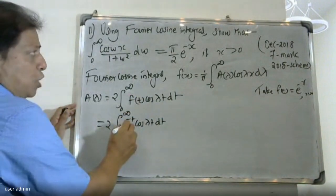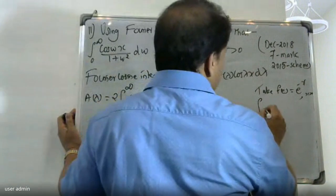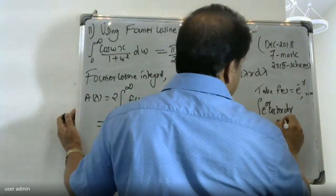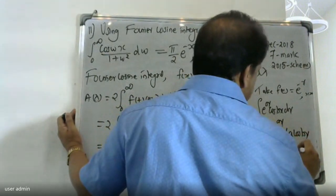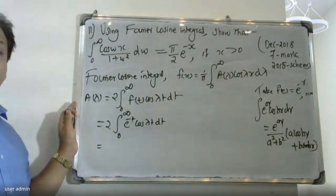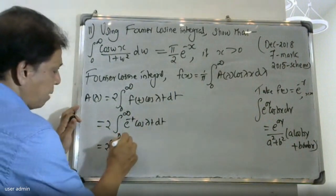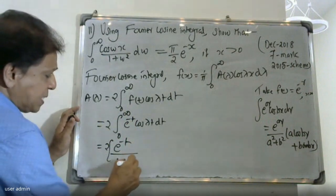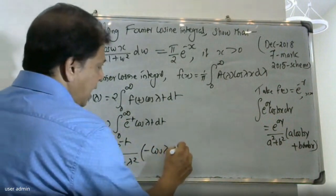Using the standard formula: ∫ e^(ax) cos(bx) dx = e^(ax) / (a² + b²) · [a cos(bx) + b sin(bx)], we apply this to evaluate ∫₀^∞ e^(-t) cos(λt) dt.